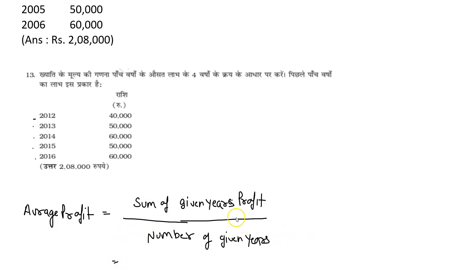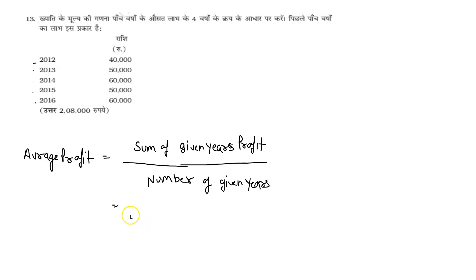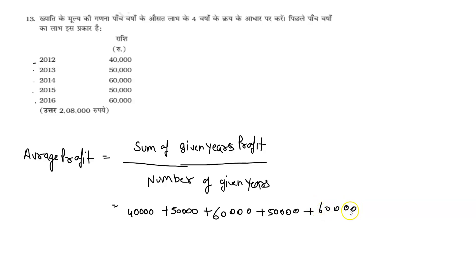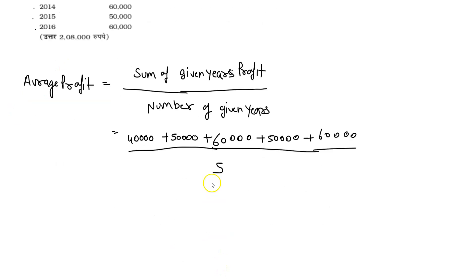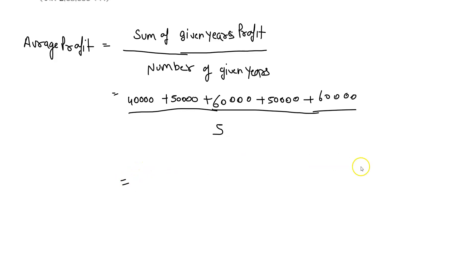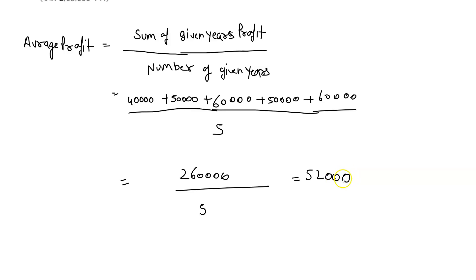So, sum of given years of profit. The first one is 40,000 plus 50,000 plus 60,000 plus 50,000 plus 60,000, divided by 5 years. So 40,000 + 50,000 + 60,000 + 50,000 + 60,000 equals 2,60,000. Divided by 5 equals 52,000.